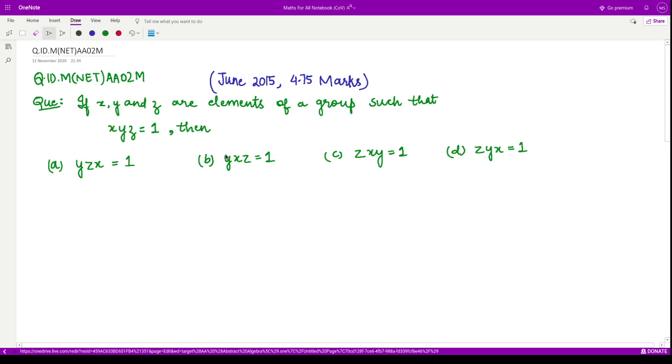Hello everyone, welcome to this video. In this video we shall see a question from June 2015 consisting of 4.75 marks. The question says if x, y, and z are given to be elements of a group such that xyz equals one, then which among these four options is correct?